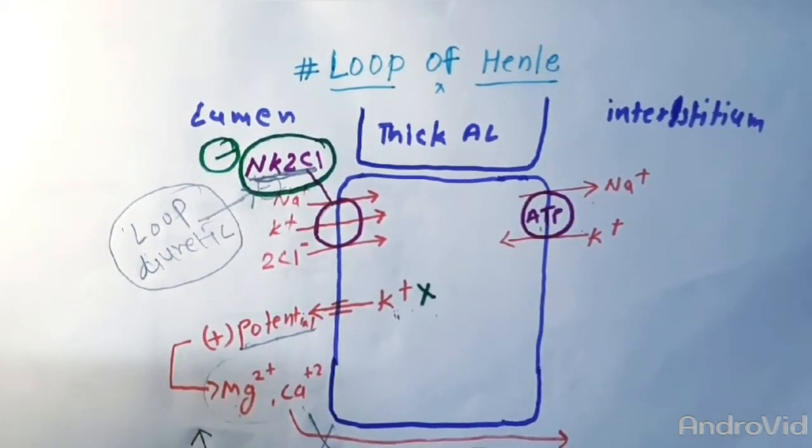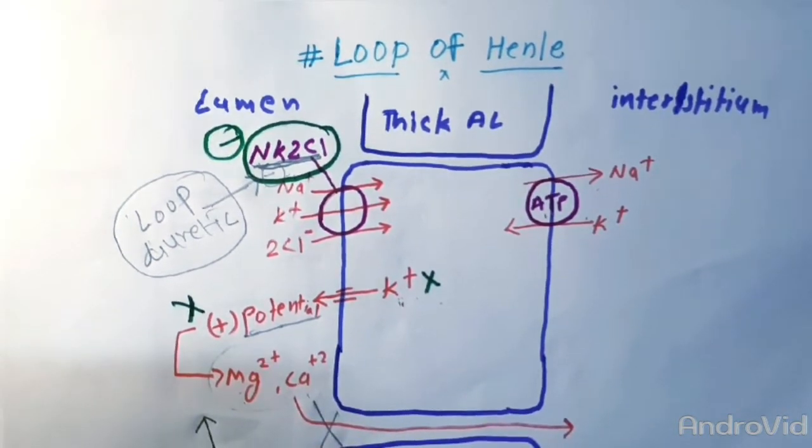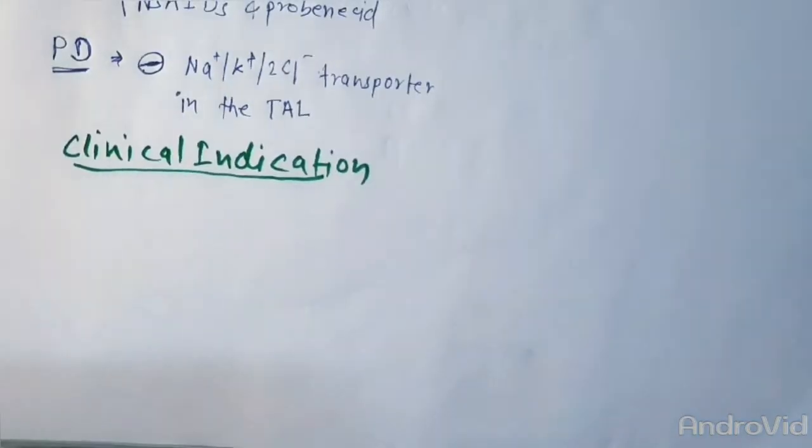So there will be no paracellular transportation of magnesium and calcium. Talking about their uses, they are used in hypokalemia, can also be used in acute renal failure, and can also be used in anion overdose.